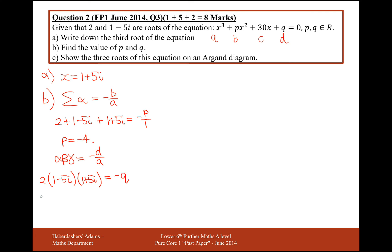I'll expand the double brackets first, so 2 times 1 minus 5i and then plus the 5i will cancel out, so that would be minus 25i squared equals minus q. i squared is minus 1, so it would be plus 25. So 1 plus 25 is 26. 2 times 26 is 52, so q equals minus 52.